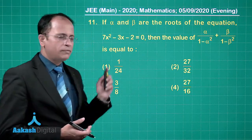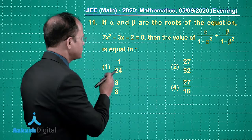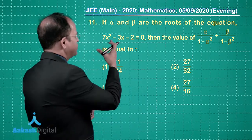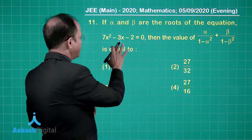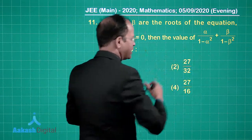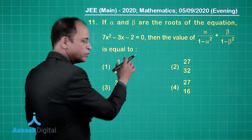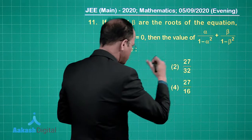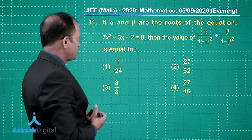Let us talk about question number 11. It is a direct problem of quadratic equation. If alpha and beta are the roots of the equation 7x² - 3x - 2 = 0, then the value of α/(1-α²) + β/(1-β²) is equal to — options are 1/24, 27/32, 3/8, and 27/16.